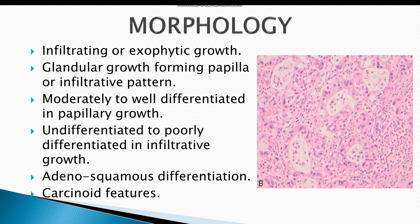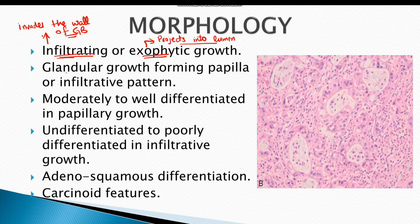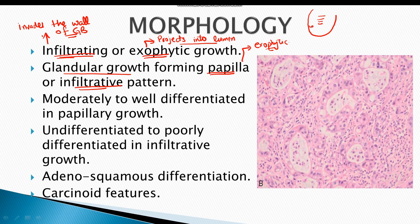Gallbladder carcinoma forms two types of growth patterns. The first is infiltrating growth, where the tumor invades the wall of the gallbladder. The other is exophytic growth, where the tumor projects into the lumen. The cancerous cells form a glandular growth pattern — either forming papillae (exophytic finger-like projections into the lumen) or showing an infiltrative growth pattern.